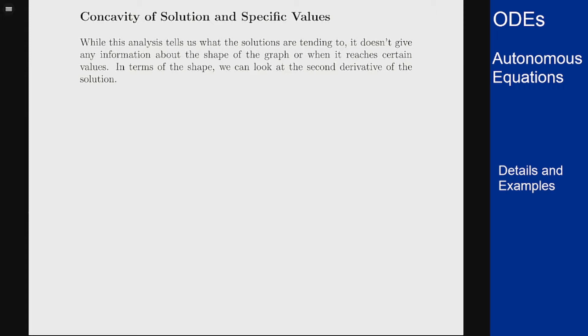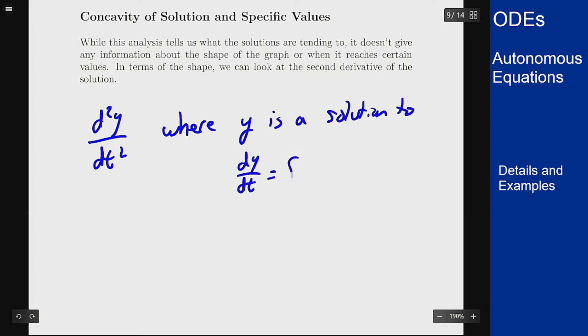So to get to the shape we want to look at concavity or the second derivative of our solution. I want to look at d squared y dt squared where y is a solution to dy dt equals f of y.